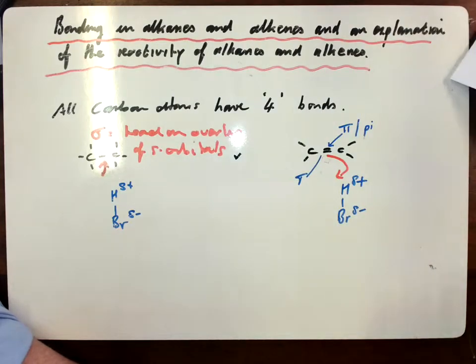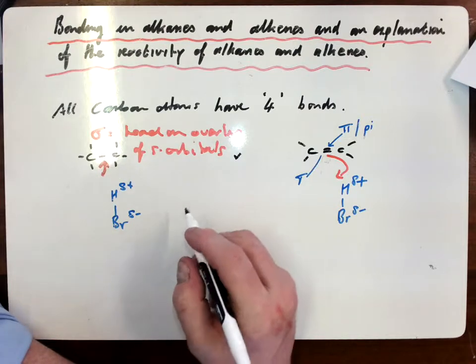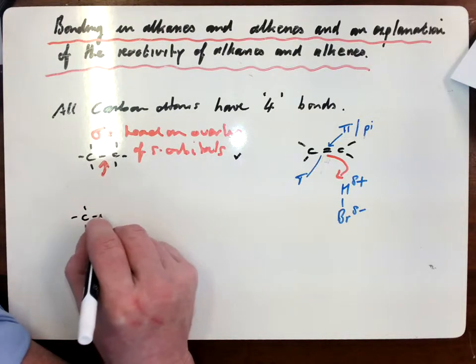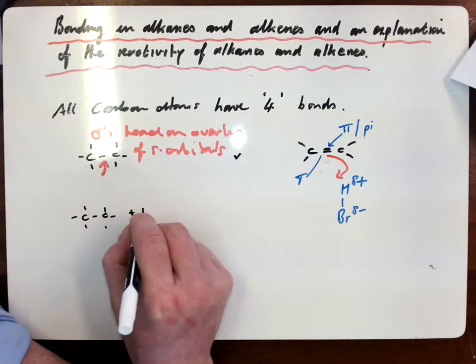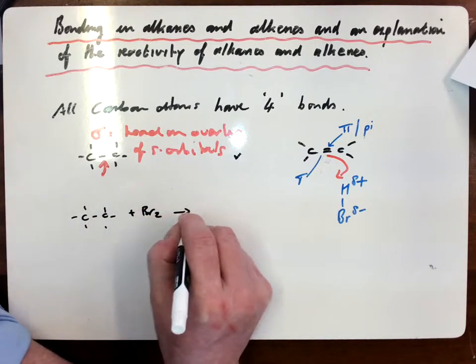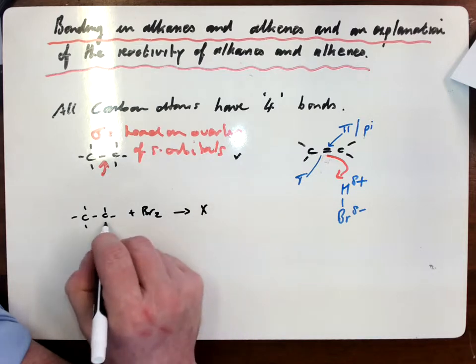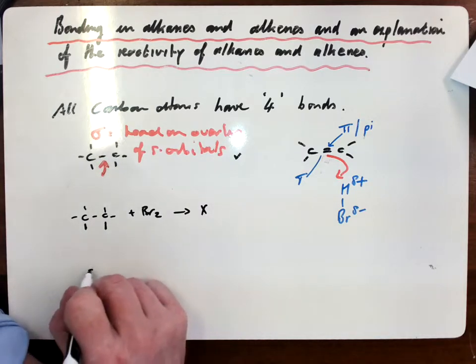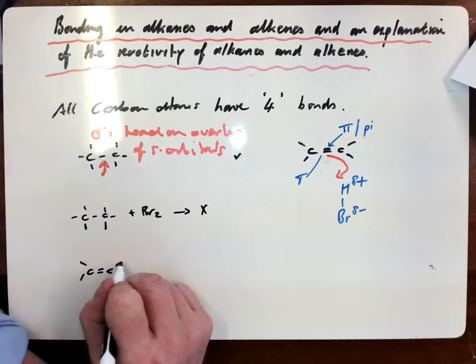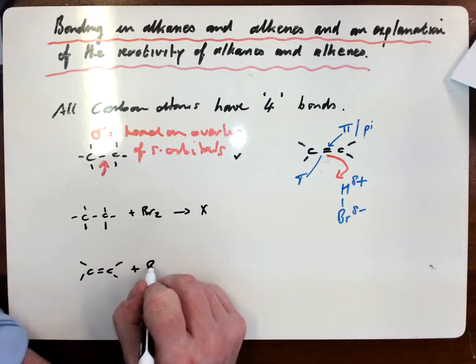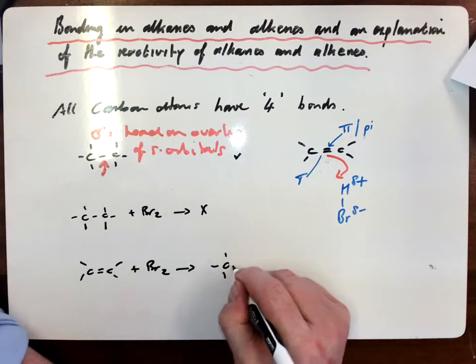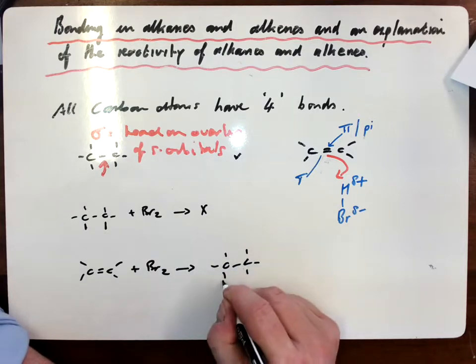So what does that mean then in terms of implications for the reactivity of alkanes versus alkenes? Well, hopefully we would all know through GCSE that alkanes are very unreactive. So if I added bromine or bromine water to them, there would be no reaction. If, however, I added bromine to an alkene, it will decolorize it and I will get the following product.